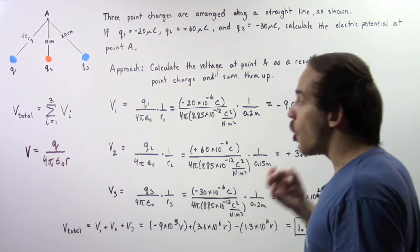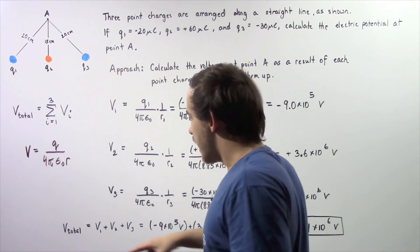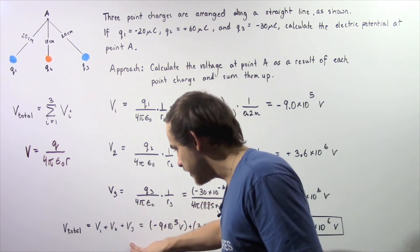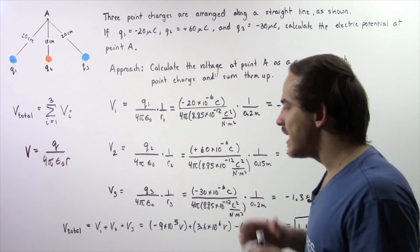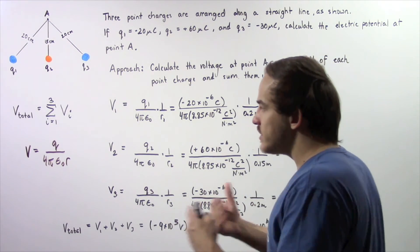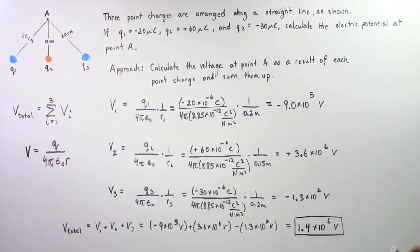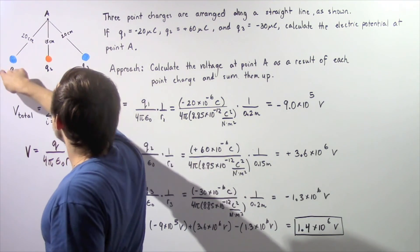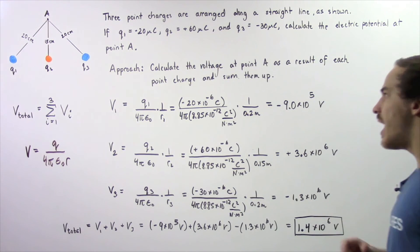To calculate the total voltage, we simply take the algebraic sum: V-total equals V1 plus V2 plus V3. We do this because voltage, unlike electric field, is a scalar, so we simply take the algebraic sum. Summing these three quantities, we get approximately 1.4 times 10 to the 6 volts. So the voltage at point A as a result of these three stationary electric point charges is a positive value: 1.4 times 10 to the 6 volts.